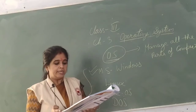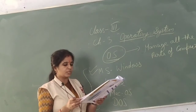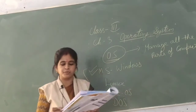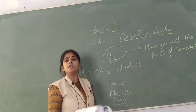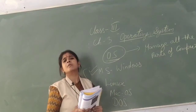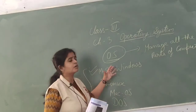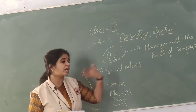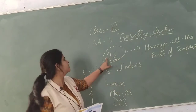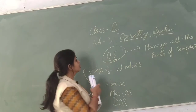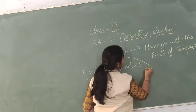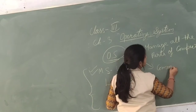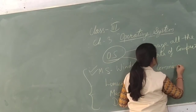Operating system is required for every computer to work properly. It also interacts with users. Since we cannot communicate directly with computer hardware, we need a mediator between the user and the computer, and that mediator is the operating system. So another task of the operating system is that it is a communicator between the user and the computer.